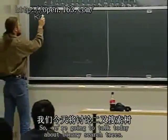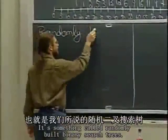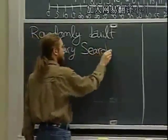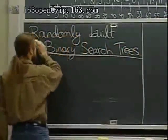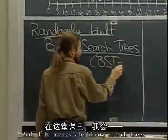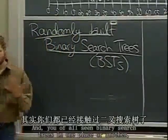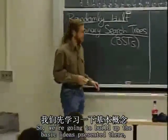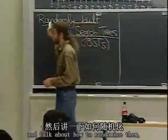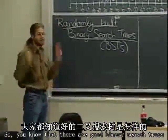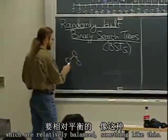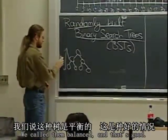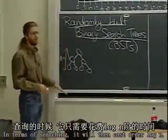We're going to talk today about binary search trees, something called randomly built binary search trees. I'll abbreviate binary search trees as BSTs throughout the lecture. You've all seen binary search trees in recitation on Friday, so we're going to build off the basic ideas presented there and talk about how to randomize them and make them good. There are good binary search trees which are relatively balanced — the height is log n, we call them balanced, and anything order log n will be fine. Searching will then cost order log n.